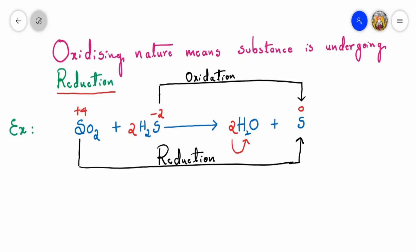So I have to balance it on the product side by writing three. Now, the oxidation state of sulfur in SO2 is plus four, whereas in H2S it is minus two. We can see that sulfur in H2S is undergoing oxidation — that is, from minus two it increases to zero. This increase in oxidation number is called oxidation.